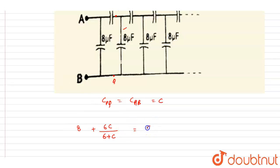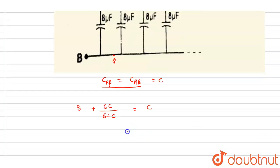Right, so this will be the expression. Now we can solve it for C. So if you see here, we can write down 8 plus 6C divided by 6 plus C equals C.